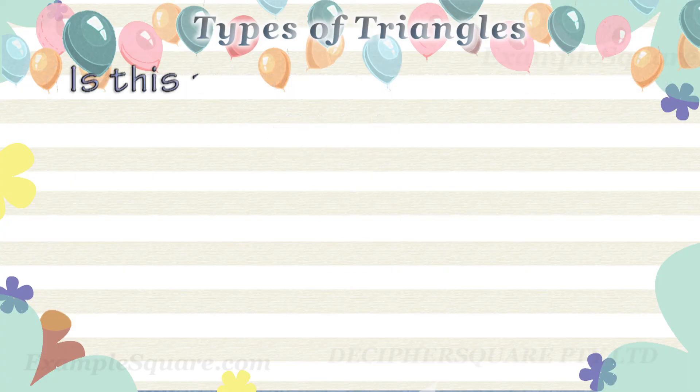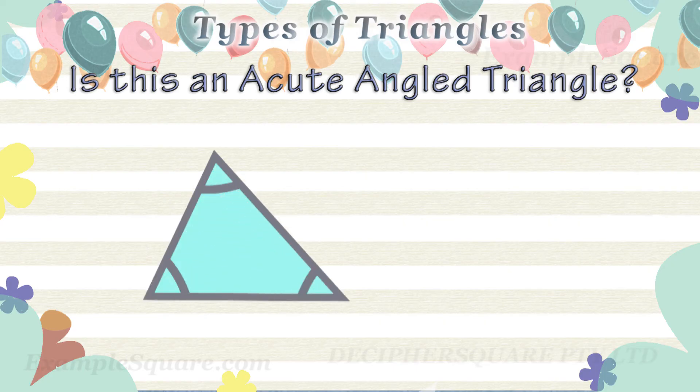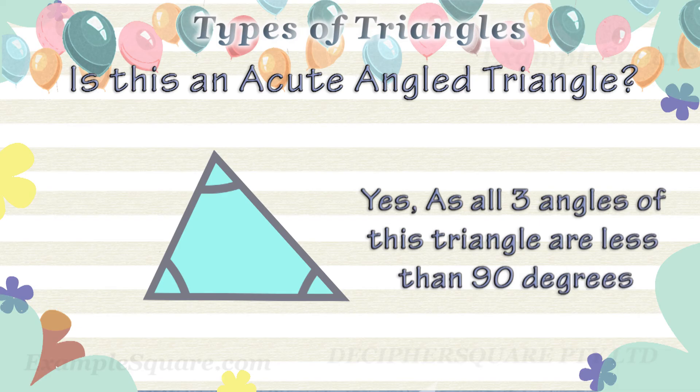Is this an acute angled triangle? Yes, this is an acute angled triangle as all three interior angles are less than 90 degrees.